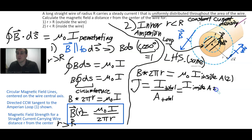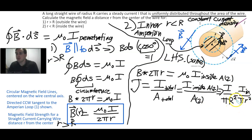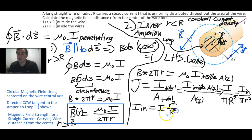The total current is I, the total cross-sectional area is πR², and Area 2 is πr². Setting the current density ratios equal: I/(πR²) = I_in/(πr²). Solving for I_in, the π's cancel, giving I_in equals I times little r squared over big R squared.